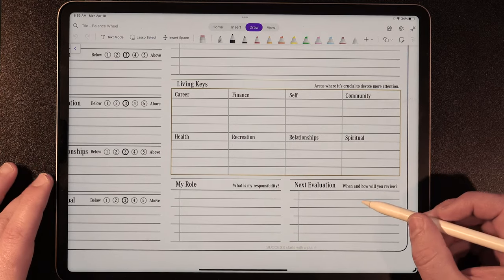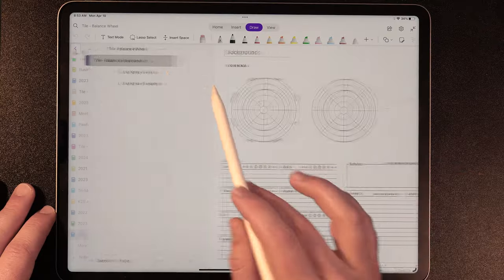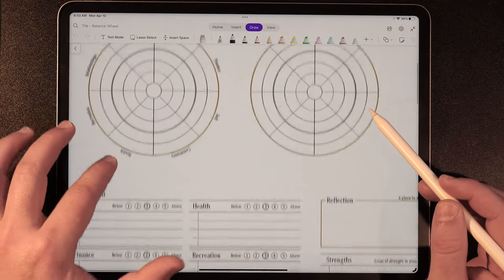And then from here, what is your responsibility? And when are you going to have the next evaluation when it comes to this balance wheel? For me, I'm probably going to start by doing this on a monthly basis. And then after I feel that I've gained some traction and my wheel feels like it's more circular in shape, I'm going to start doing this on a quarterly basis.